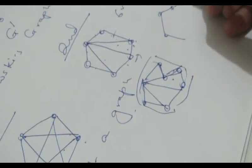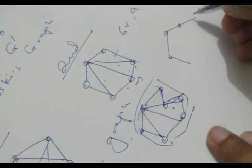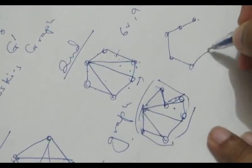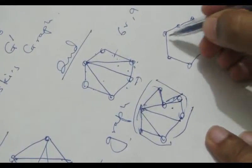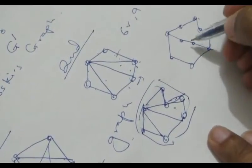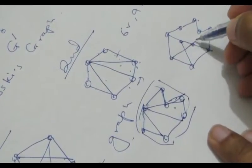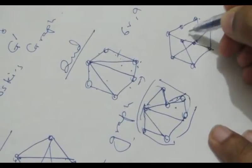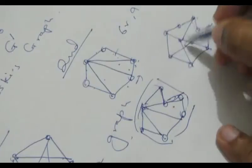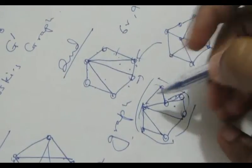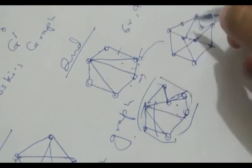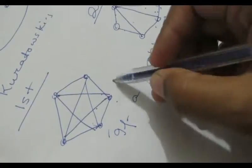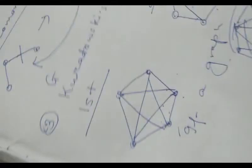If there is a homeomorph of any of these two graphs, then it is a Kuratowski's graph. The accurate drawing is like this — they have broken it out here and added some other vertices. So if a graph is a homeomorph of either of those two graphs, it's a Kuratowski's graph. Now we go to dual of a graph.